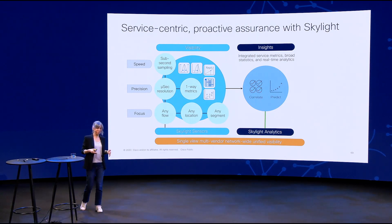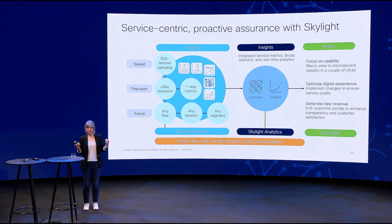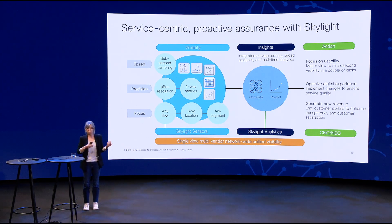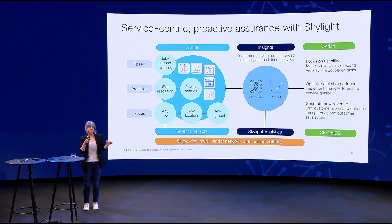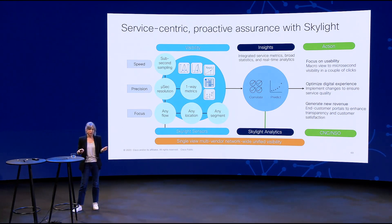On top of that, it's the action part. The action could be something as simple as being able to understand, with just a few clicks, what's going on — if there is any issue, what's going wrong. Because we can detect anomalies, we are able to see if things are going wrong and act on that. For that, we are leveraging our integrations with automation — Cisco automation platforms, with CNC and with NSO. It could also be something like generating new revenue, which we can do with our end-customer portal.